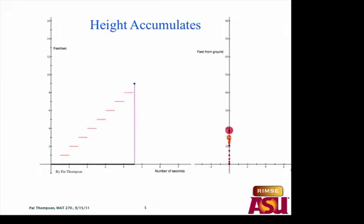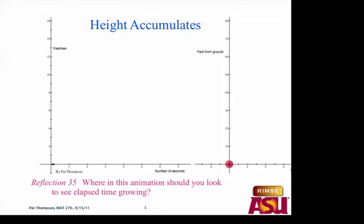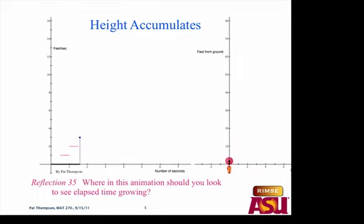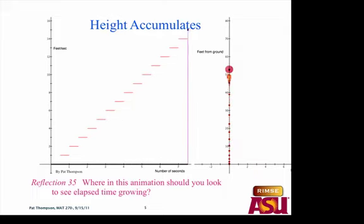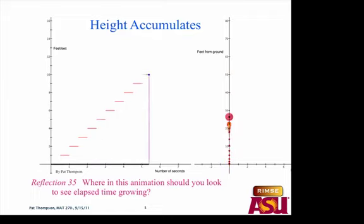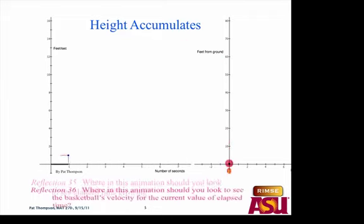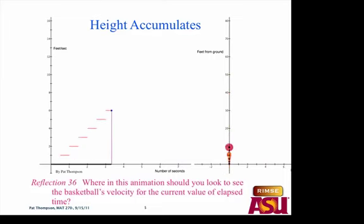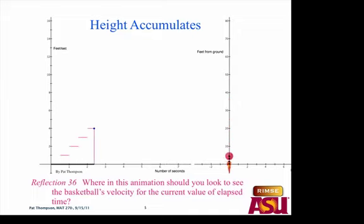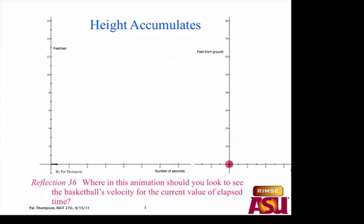Let's reacquaint ourselves with the rocket-power basketball animation. Where do you look in this animation to see time elapsed growing? The x-axis — that black bar is showing you time increasing. Where do you look to see the basketball's velocity for the current value of elapsed time? The y-axis on the left-hand graph — at any given time it's showing us what the velocity is.